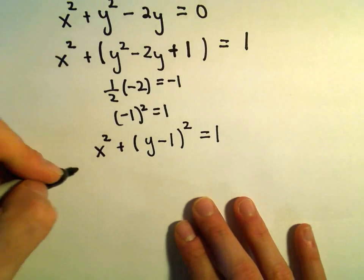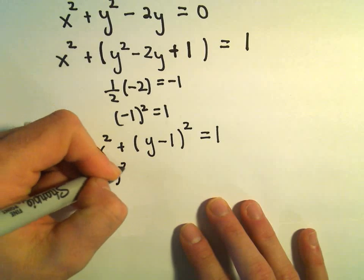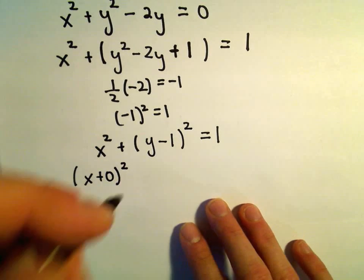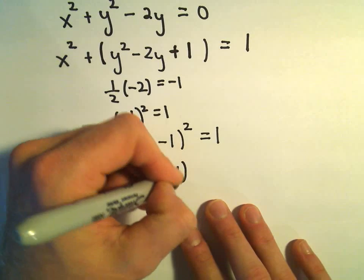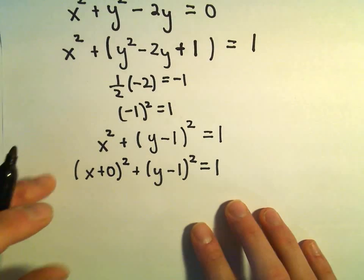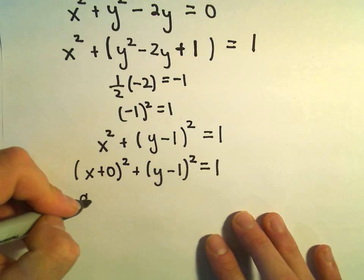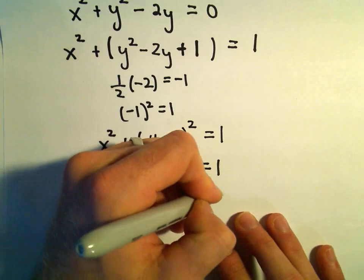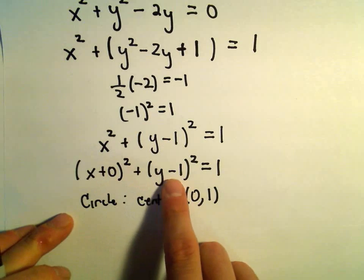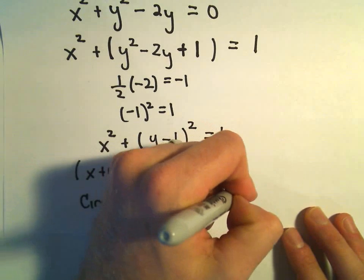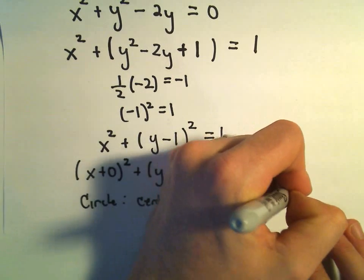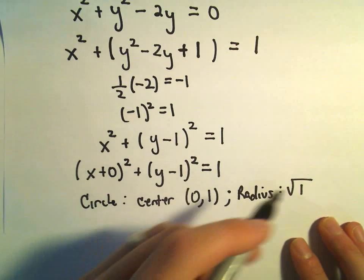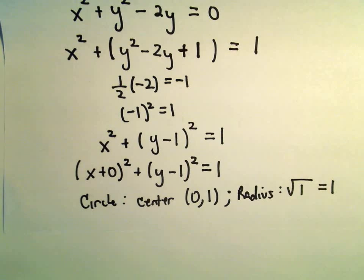Now we have x squared plus y squared minus 2y plus 1, which factors as y minus 1 quantity squared, equals 1. You could write this as x plus 0 squared plus y minus 1 squared equals 1. So now we've got an equation of a circle with a center at (0, 1) — remember you take the opposite signs — and a radius of the square root of 1, which is just 1.